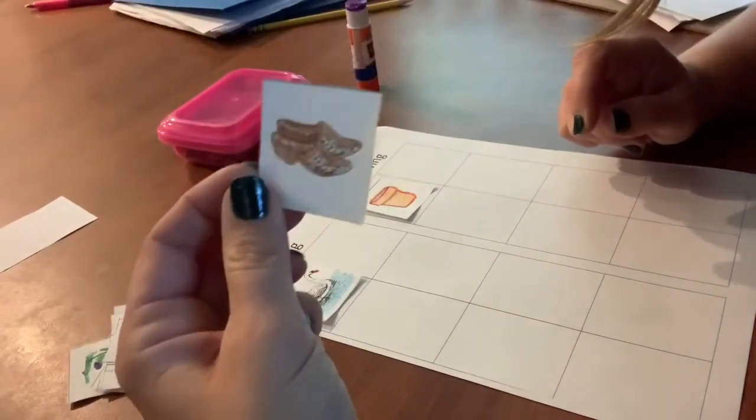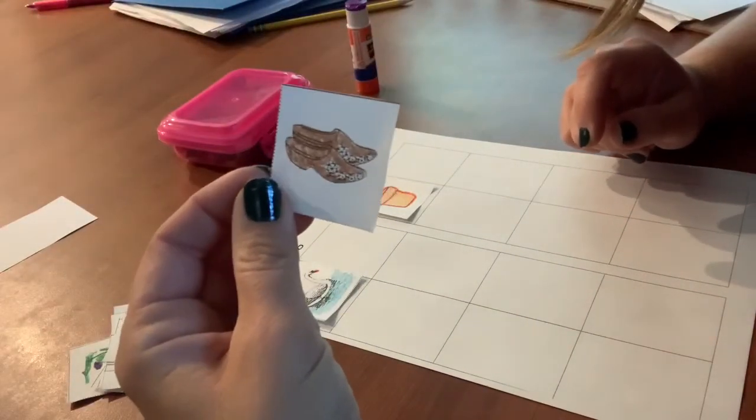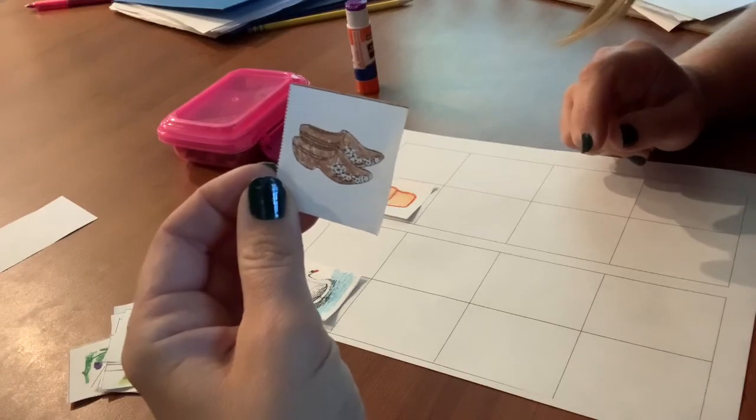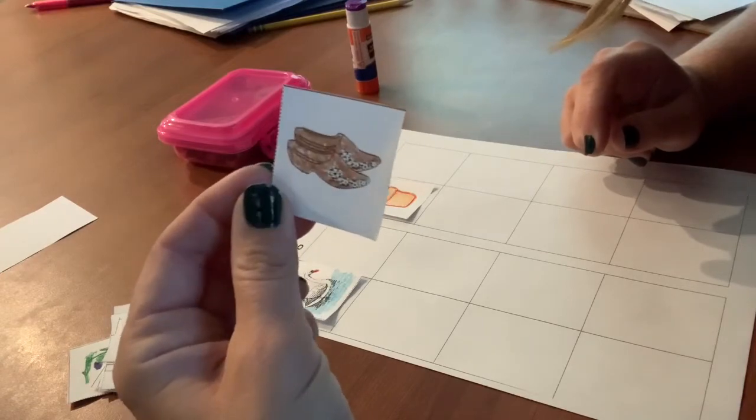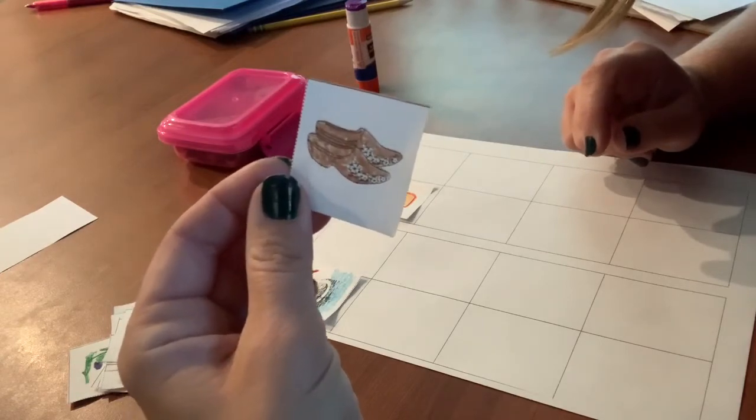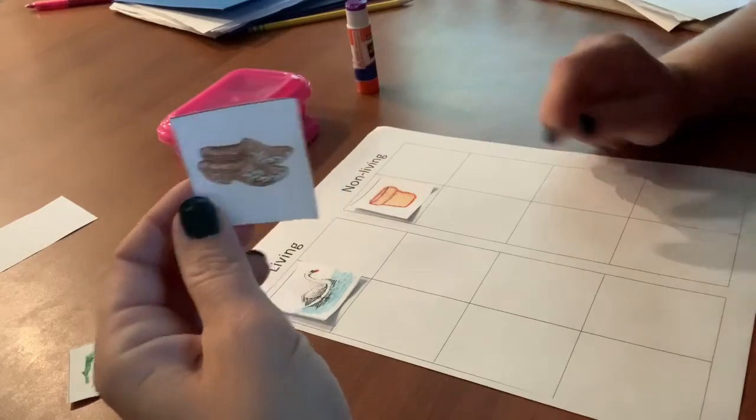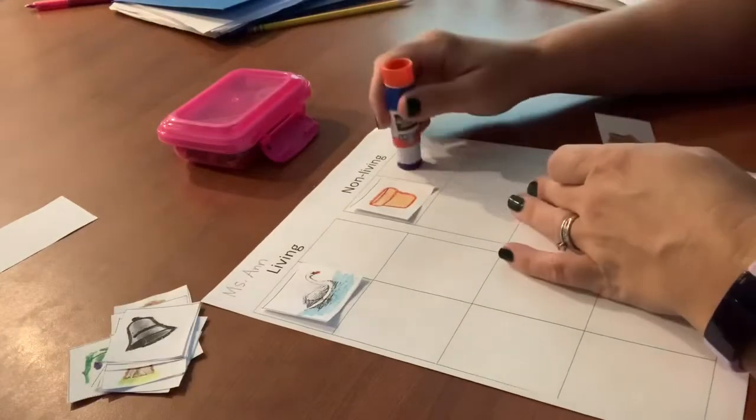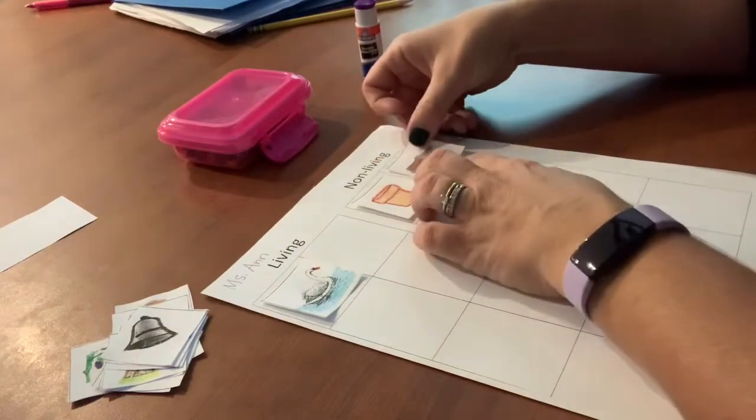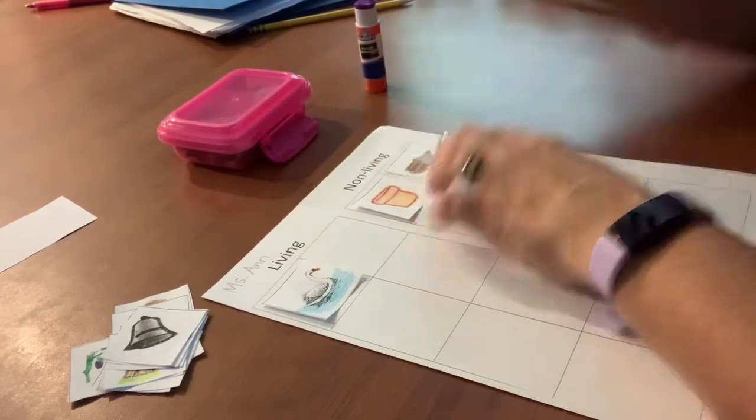Next up is this pair of wooden clogs or wooden shoes. Do these wooden shoes grow or need food? You're right. They don't. So that is going to go under non-living. Wooden shoes are a non-living thing.